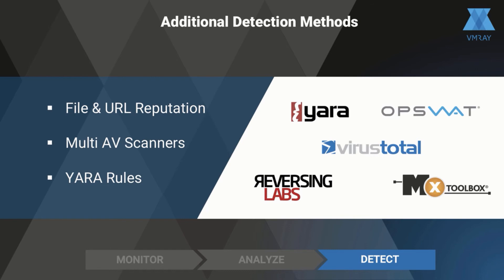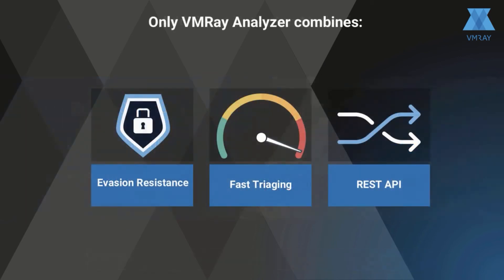we augment the core dynamic analysis with other detection methods. We incorporate file and URL reputation scoring as well as support for multi-AV scanners like Opswat and VirusTotal. Additionally, a broad range of Yara rules are included by default for flagging known suspicious behavior and attributes.